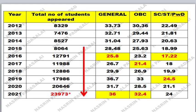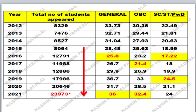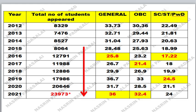For the OBC category, you should get 35 marks out of 100. Comparing to 2021, the OBC cutoff was 32.4 marks out of 100. Note that in GATE examinations, even decimal values matter — if a student has 32.2 marks and belongs to OBC, they won't be considered a qualifier. You need 32.4 or above to be considered qualified.